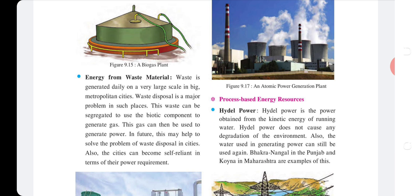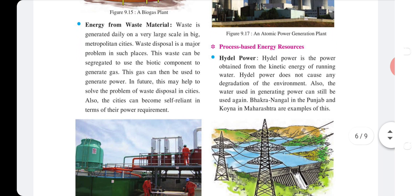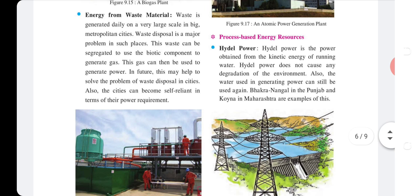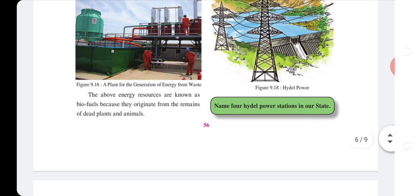Process-based energy resources — Hydro power: Hydro power is obtained from the kinetic energy of running water. It does not cause any degradation to the environment, and the water used in generating power can still be used again. Bakra Nangal in Punjab and Koyna in Maharashtra are examples. Name the hydro power stations in our state.